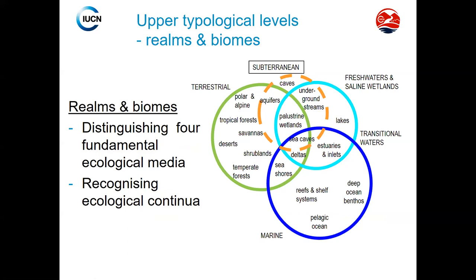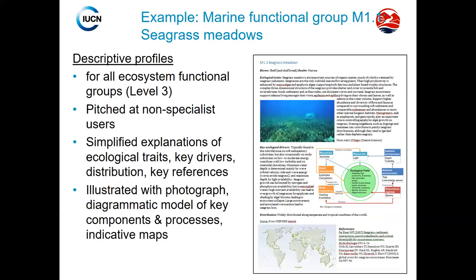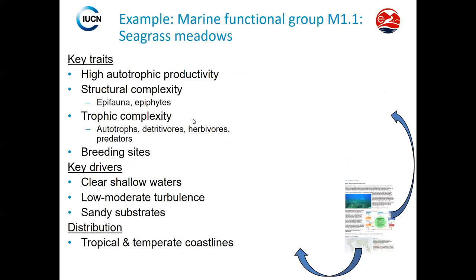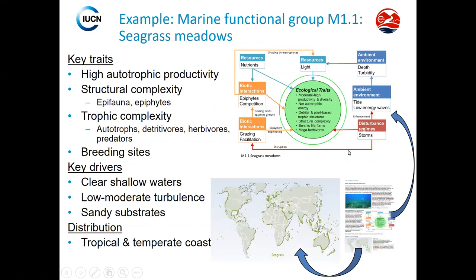This leads finally to the description of functional groups — descriptive profiles organized around very basic levels that are designed for a non-specialist user, with simplified explanation of ecological traits, key drivers, distributions, and the main conceptual framework organized around them. In this example, we can see seagrass meadows organized with a basic map of distribution around the world, the conceptual model with key traits, key drivers, and how they interact among them on a basic distribution model.